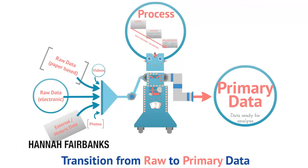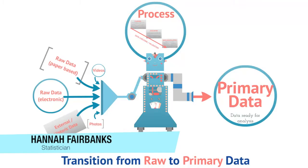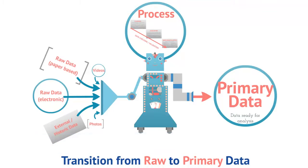Once the data has been collected for your activity, it needs to follow a process from being in its original raw state to transition through to the final primary data sets that will be analysed. This video introduces the key stages in this transition process.